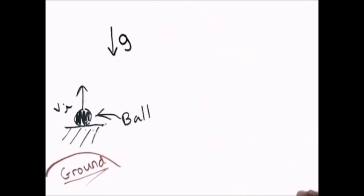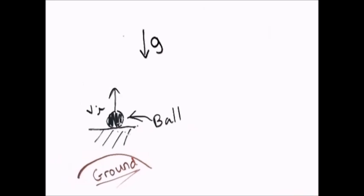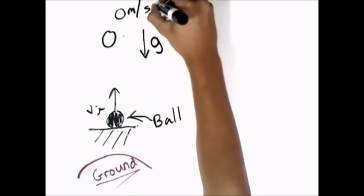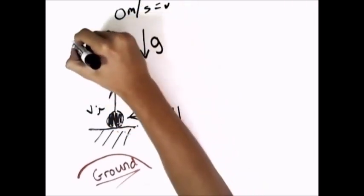Now let's figure out what happens to the velocity of the ball after it is thrown. We know the force of gravity is going in the opposite direction of the throw, so the ball will not maintain its velocity. The ball won't accelerate upward either, because gravity is always pulling it down. So as the ball goes up, its speed will decrease, and at one point it will reach zero meters per second — that's its maximum height.